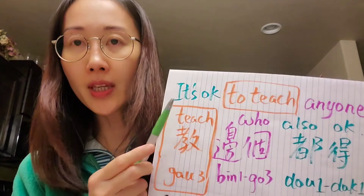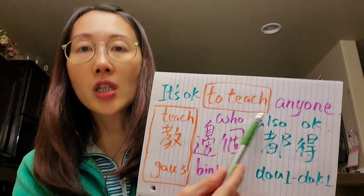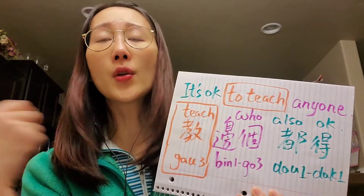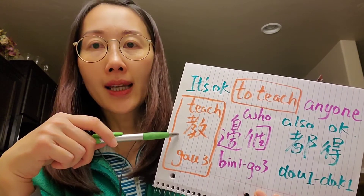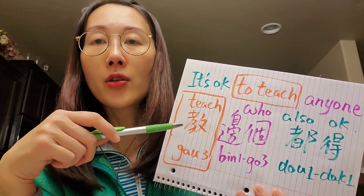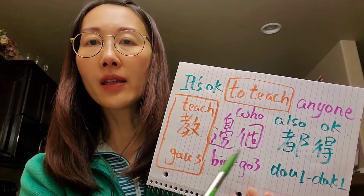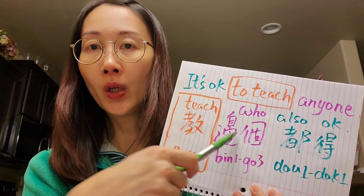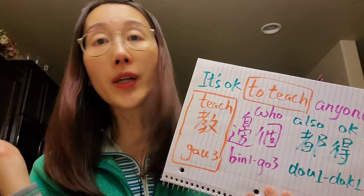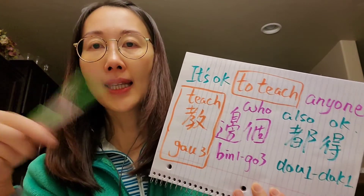Let's see example three, where we change to another question word. If I want to say 'it's okay to teach anyone,' we use the verb 教, which means 'to teach,' and then 邊個, which means 'who' or 'anyone.' So 'it's okay to teach anyone' is 教邊個都得.